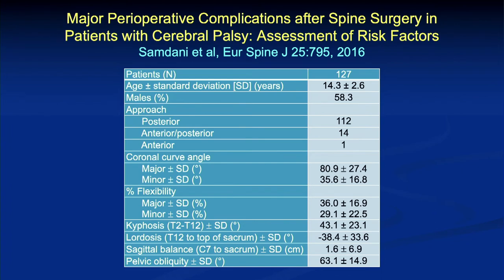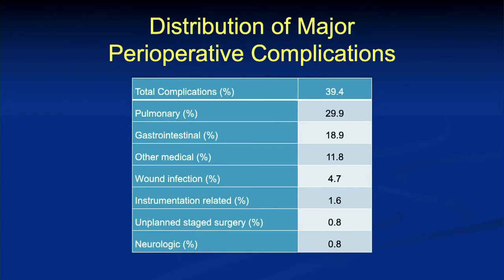One of the earlier studies from that dataset looked at perioperative complications. We wanted to get at what are the main reasons and risk factors for these patients. In this study of 127 patients — where AIS literature shows mean Cobb angles of 50-55 degrees — here you're looking at mean Cobb angles of 80 degrees with significant pelvic obliquity. Thirty-nine percent of the patients had a major perioperative complication. A lot were pulmonary and GI, plus wound infections. After this study, we reclassified our complications with a standardized method, but the numbers are still high.